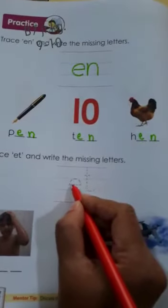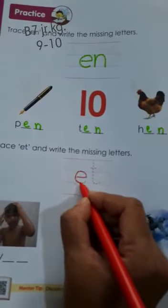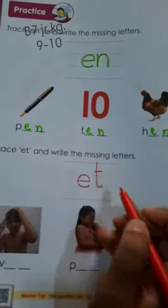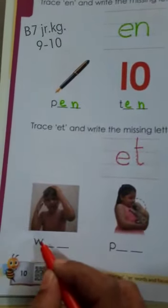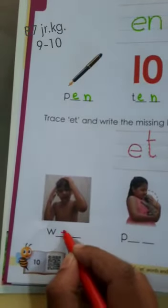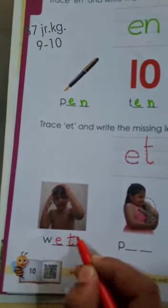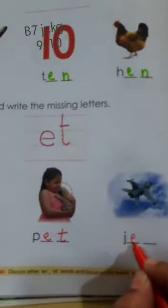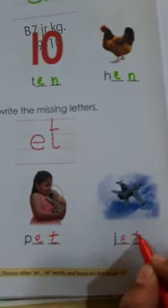Now, the et words. E, T, et. Now, W, et, wet. P, et, pet. And here, J, et, jet.